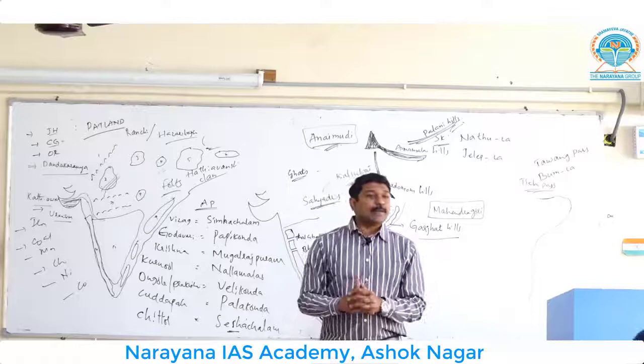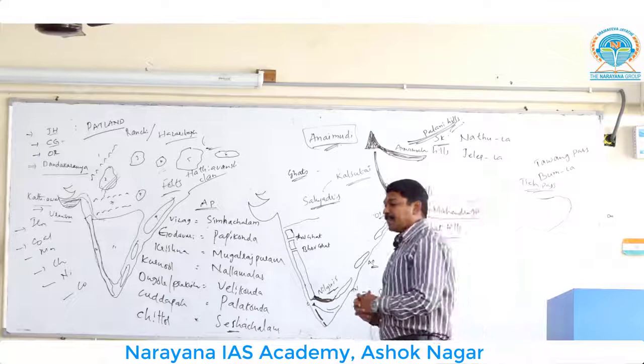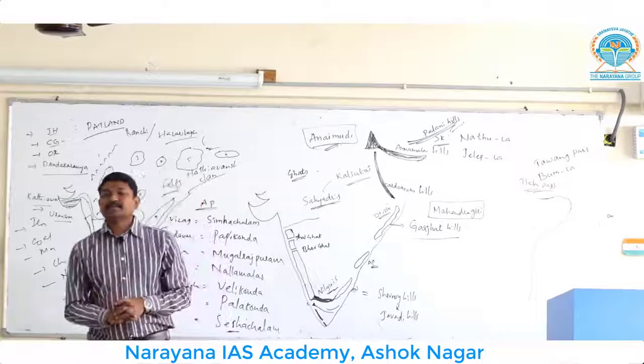The two very important minor physiographic features are coastal plains and islands. The minor physiographic features like coastal plains and islands are quite significant. We will now focus on the coastal plains.